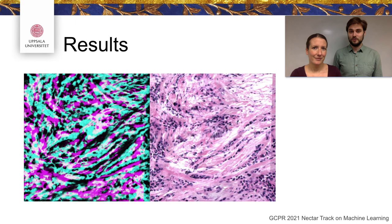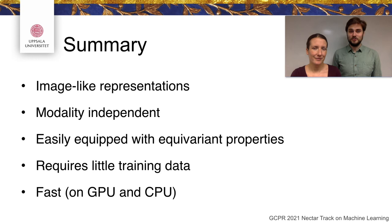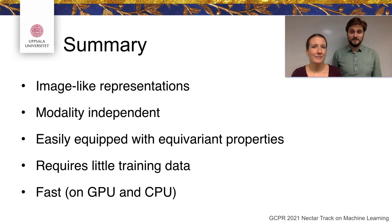In summary, we can generate image-like representations which are modality-independent and easily equipped with equivariant properties — rotational equivariance in our case. When using data augmentation, very little data is needed; a single image can be enough. The method is also fast, both during training and inference, enabling the use of our method on computers which do not have access to a GPU, as for example in a clinical setting.